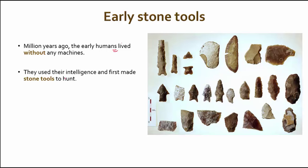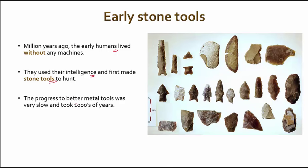Early men used their intelligence and first made stone tools to hunt. As you can see here, these were stone tools that they carved to make pointy edges, which made it easier for them to hunt. And then the progress to better metal tools came much later — it was a very slow progress and took nearly thousands of years from the early stone tools.